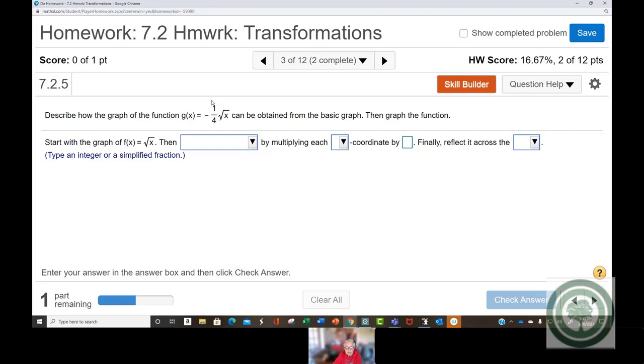And then, well, we have a vertical shrink and a vertical reflection. So, a vertical shrink, we're going to shrink it vertically by multiplying each y-coordinate, vertical is always y, by one-fourth.